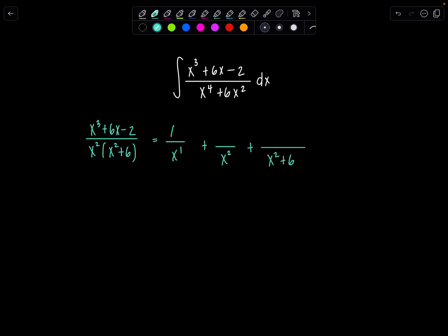So in the numerators, for the repeated linear factors, I just have constants A and B. And then since x squared plus 6 doesn't factor any further, it's an irreducible quadratic. That means in the numerator, we need a linear expression cx plus d.